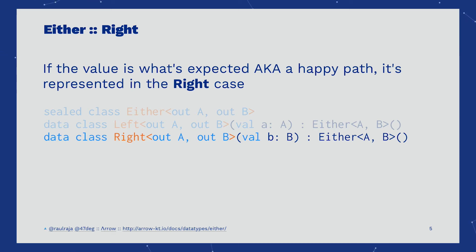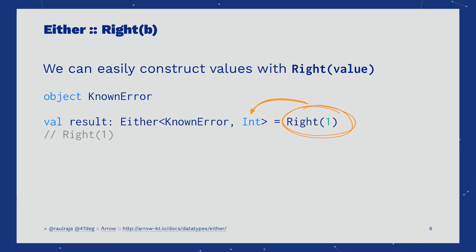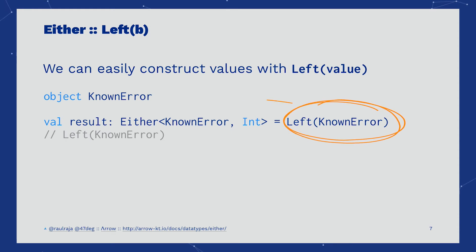Being right-biased means that most of the functions like map, filter, and flatMap will operate over the right case. We have two main constructors to work with Either. The right constructor allows us to bring values into the context of Either, placing them on the right, whereas the left constructor places them on the left.